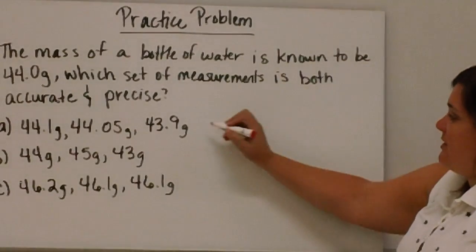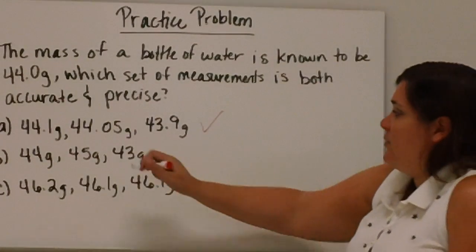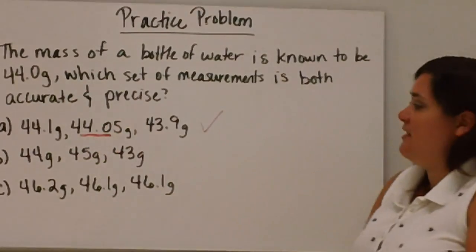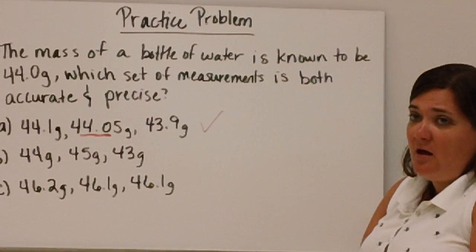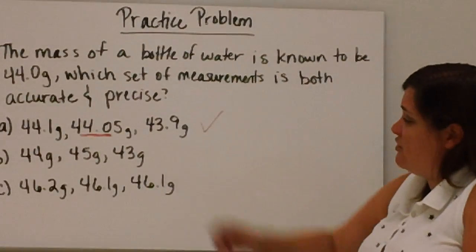The answer is A. A is both accurate and precise. Again, it's 44.0, and so here we have 44.0. We did have an extra digit. That just means that our balance had more digits than the one that was used to measure the true value.